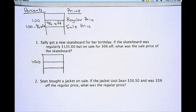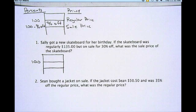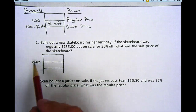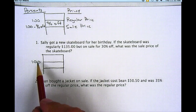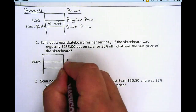So the first problem: Sally got a new skateboard for her birthday. If the skateboard was regularly $135 but on sale for 30% off, what was the sale price of the skateboard? All these problems give you two of the three things and you have to find the missing piece. I'm trying to find the sale price. The clues are: the regular price is $135 and the percent off is 30%. So I put the regular price across from 100 — regularly $135, so I put $135 on that line directly across.